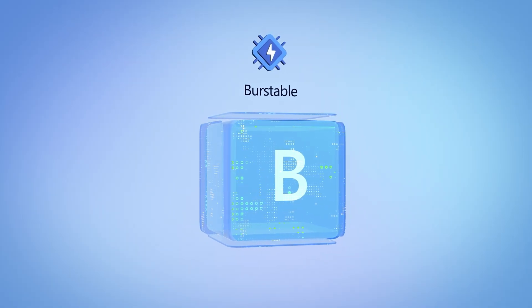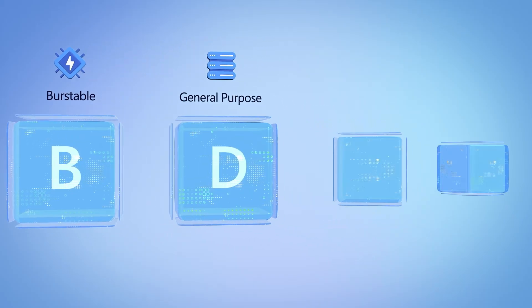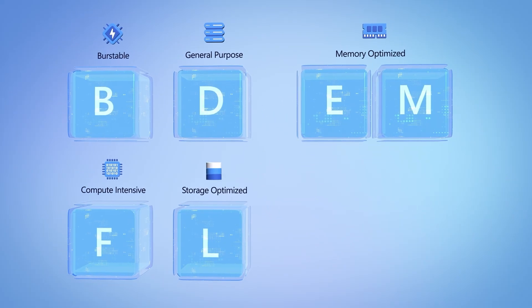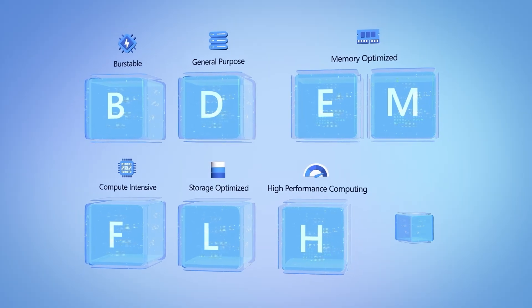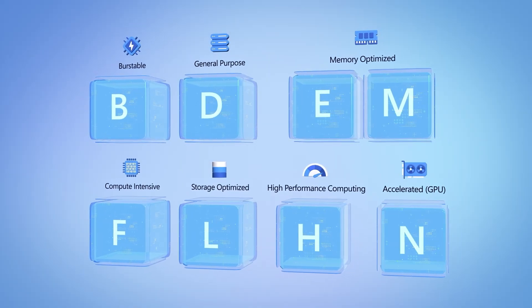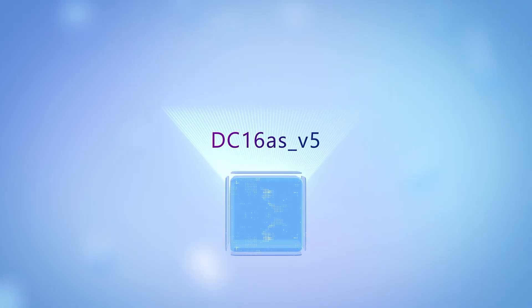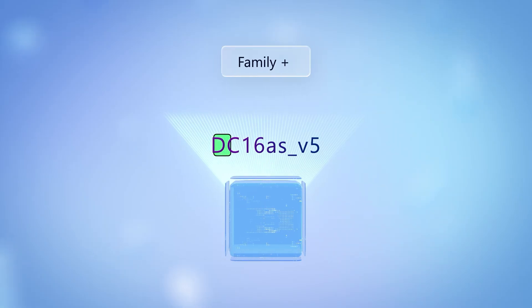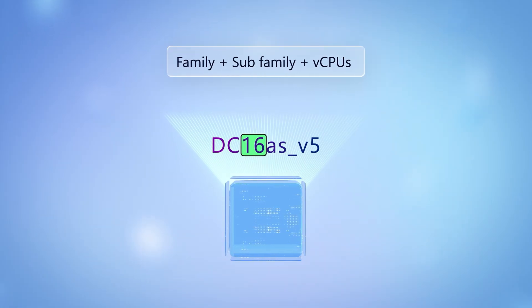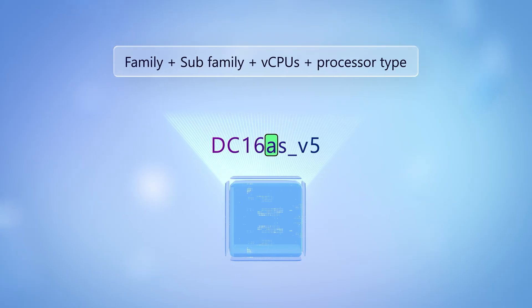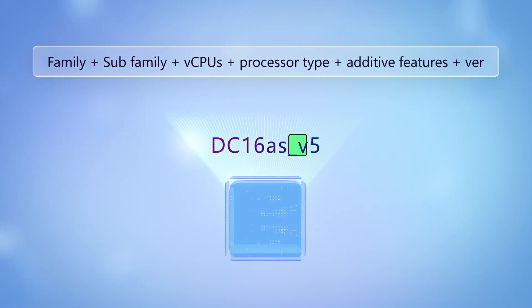So let's break down your core options to select the right VMs for your workloads. Azure VM families are optimized to run any size of workload, from general purpose to memory, compute, and storage-intensive workloads, in addition to high-performance computing and AI scenarios. When you're looking at Azure VM sizes, there's a structured format that helps you understand the characteristics of each VM. It starts with the family, followed by an optional subfamily, the number of vCPUs, the processor type and additive features, and the version of the VM.